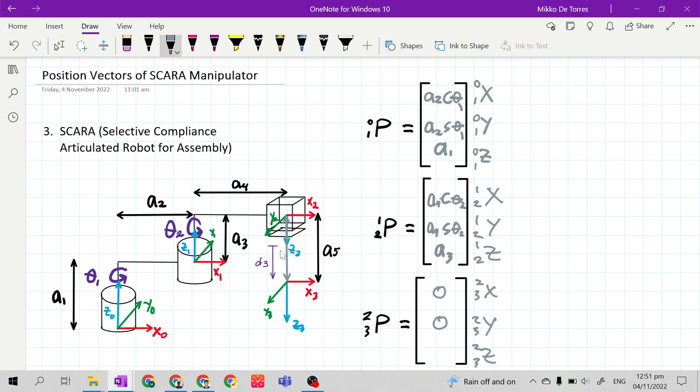then along z sub 2 axis we have a sub 5. So this is where we put a sub 5 plus because this is prismatic joint, we will add the d sub 3.